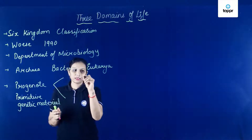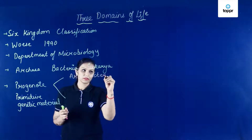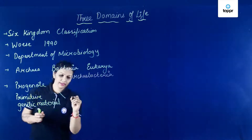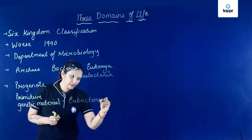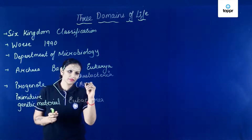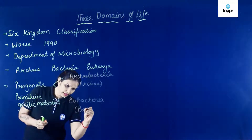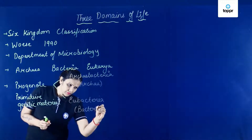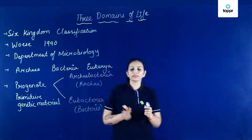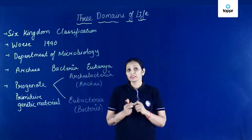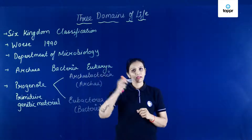Isse pehle originally bola gaya Archaebacteria and Eubacteria, and now it is called as Archaea and Bacteria. So in this way inhone three domains of life diye, jiske andar Archaea, Bacteria, and Eukarya.